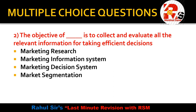The objective is to collect and evaluate all the relevant information. That is called MIS — Marketing Information System. This is the right answer. Marketing Information System is what we use to take relevant decisions with this information properly.